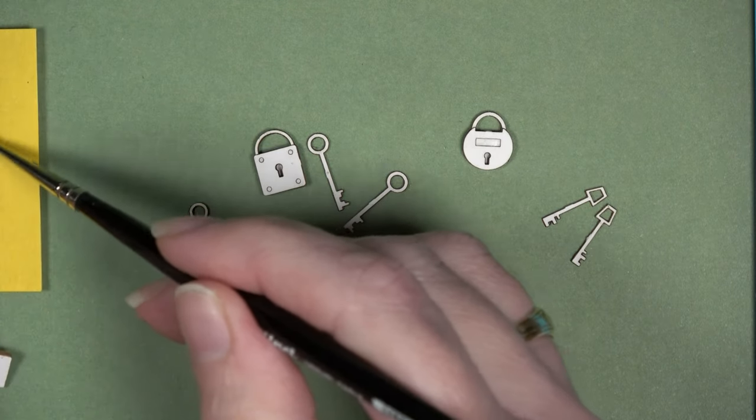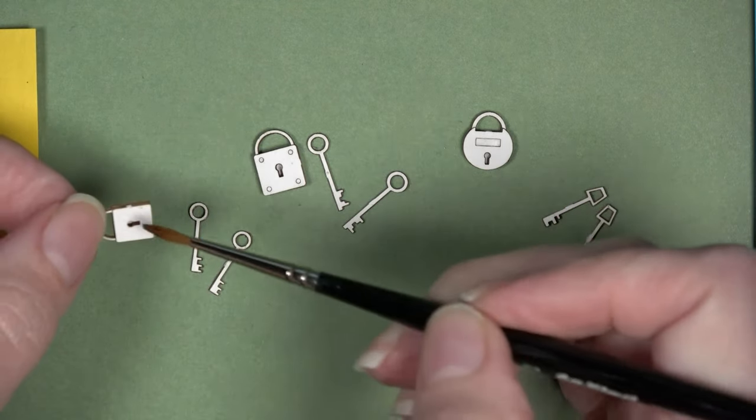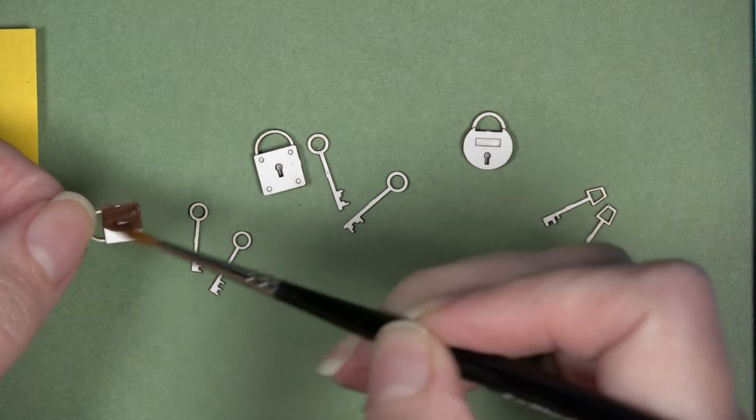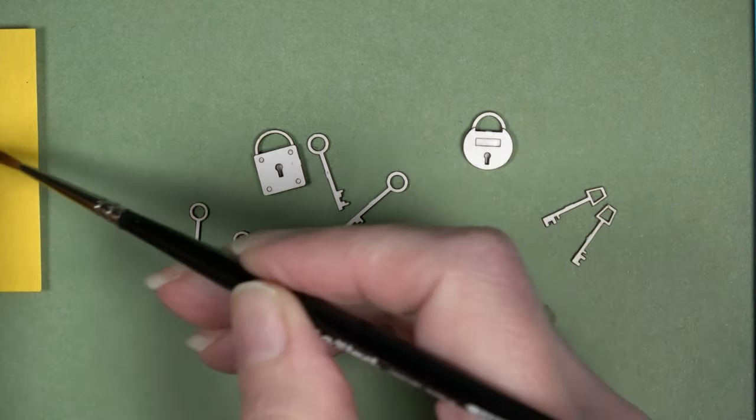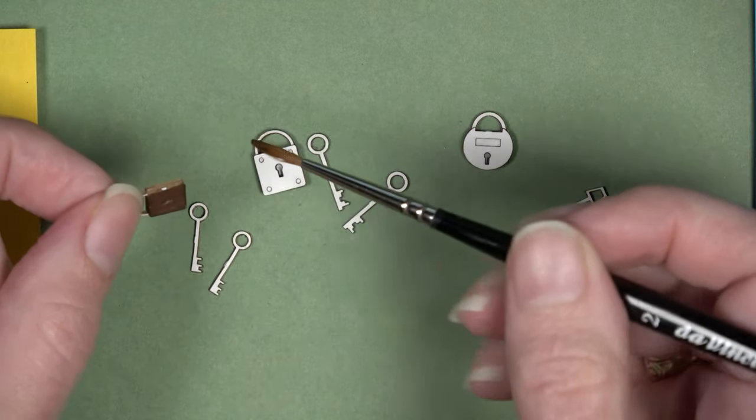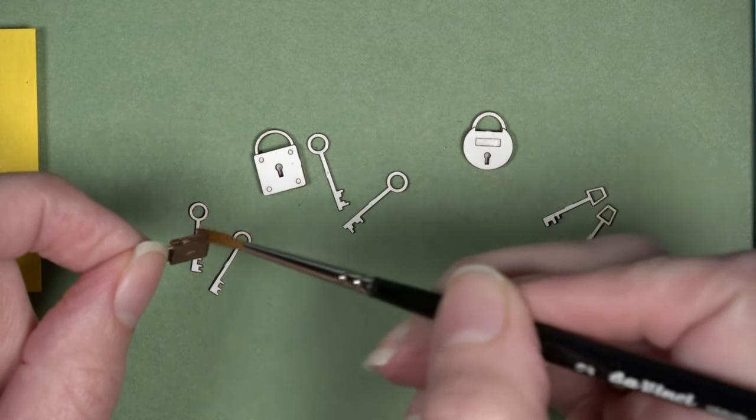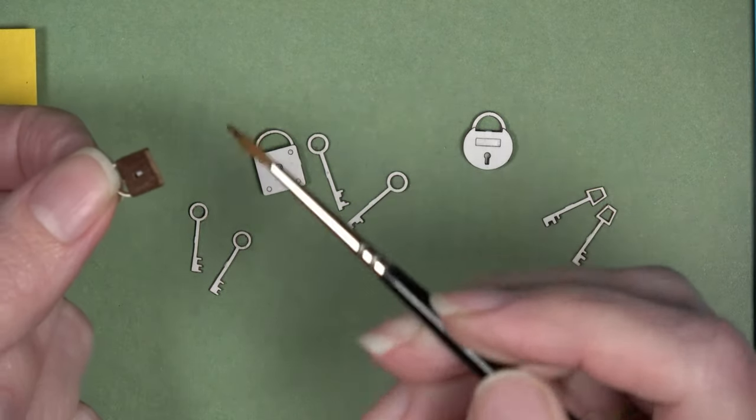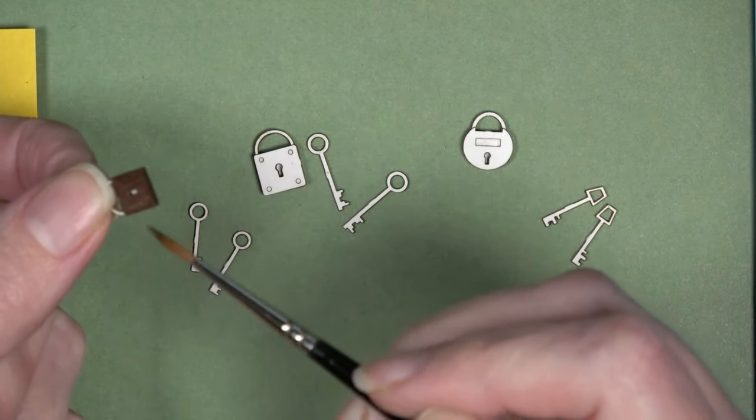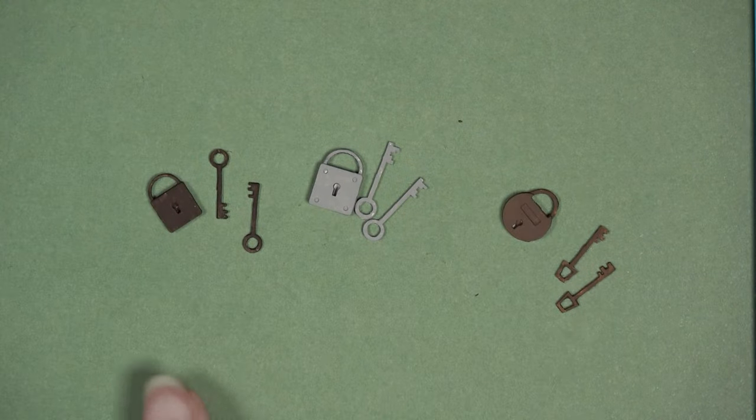I highly suggest when you're painting kits that are made from paper to use the acrylic paint straight out of the tube and not to add any water. If you add water, it could cause the paper to bubble or warp. So I'm adding just straight acrylic paint and I'm creating a base coat of a flat color. This is how they all look with the base coat on.